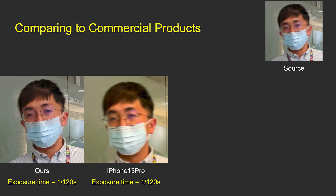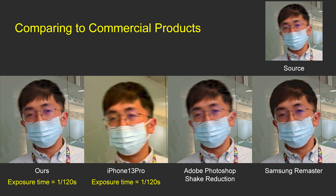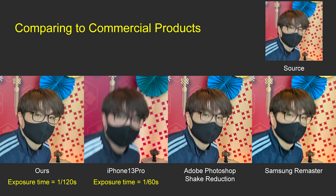We also compare our method against commercial products. We use Pixel 6 Pro and iPhone 13 Pro to capture the same moving subjects simultaneously, and we can see that iPhone captured blurry shots under the same exposure time. We also use post-capturing tools such as the shake reduction filter in Adobe Photoshop and the remaster function in Samsung Gallery to process the source image. Photoshop doesn't remove the blur completely and sometimes generates severe ringing artifacts. Samsung's remaster function works well in certain images but the results are overly smooth and sometimes doesn't apply de-blurring at all. It takes about 5 to 10 seconds for Photoshop and Samsung remaster to process a 12-megapixel image, while our fusion can be done within 0.5 seconds.